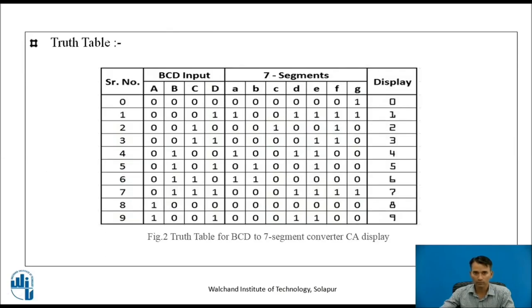This is suitable for BCD to 7-segment converter for a common anode display. It means that all the anodes of 7 segments are connected together to plus VCC, and we just have to connect the cathode part which is coming from the BCD to 7-segment converter. As we know we have 4 BCD inputs and 7 LEDs, so to glow a particular segment we have to give 0 here because anode is connected to logic one.